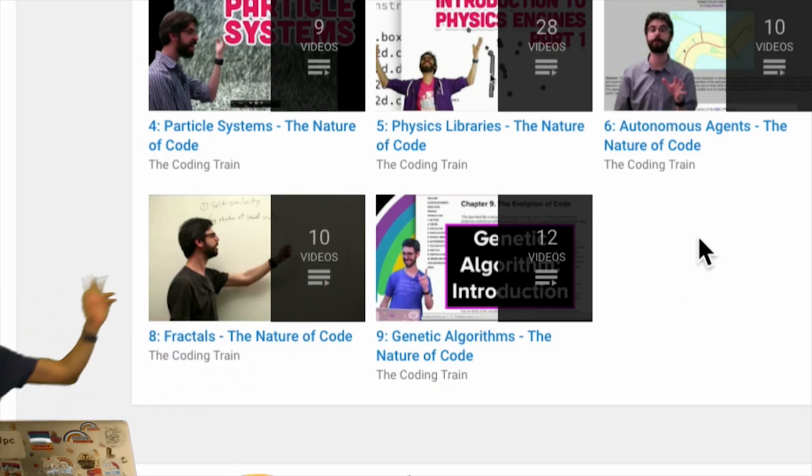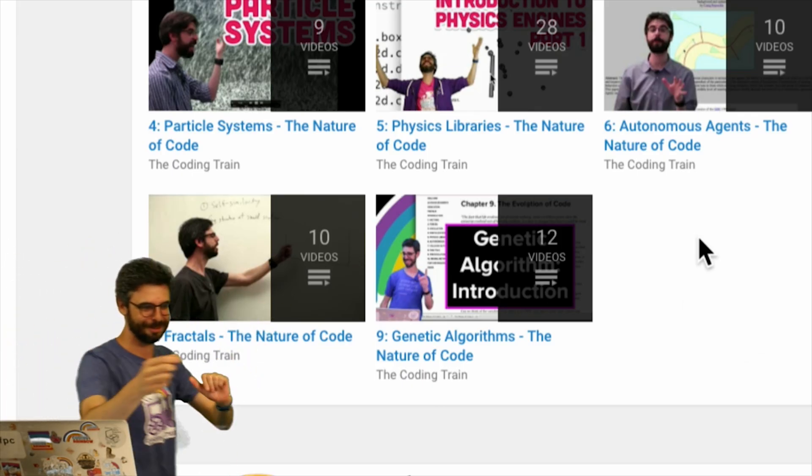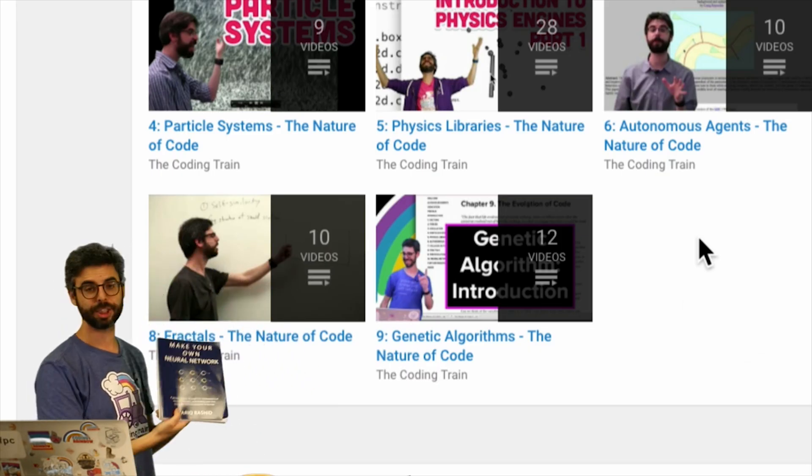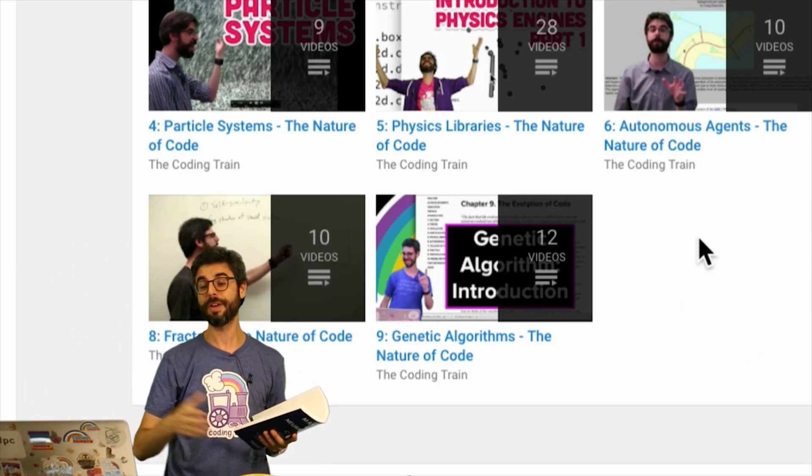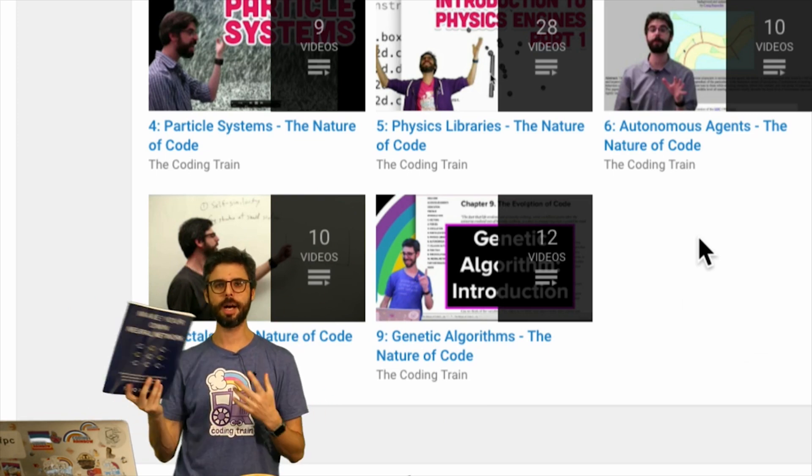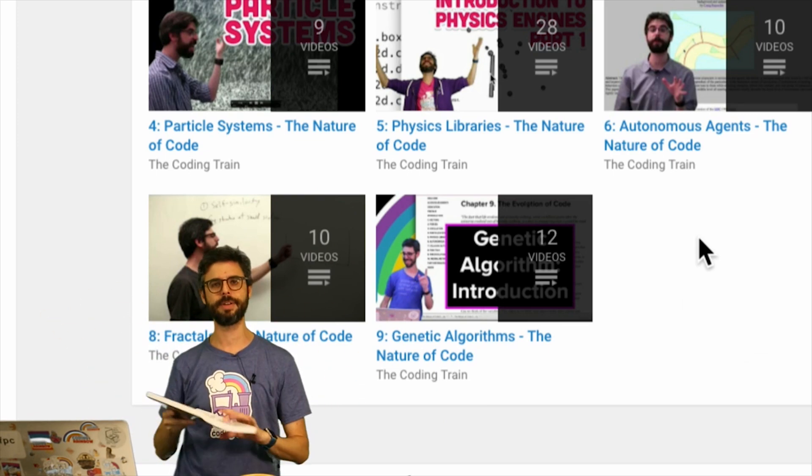I want to hold on. I'm still talking. I don't know where I put that book. Over here. I want to reference this book, Make Your Own Neural Network by Tariq Rashid, which I used to develop a lot of the materials that I will be presenting to you and developing during this series of videos.